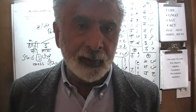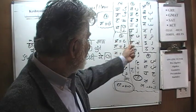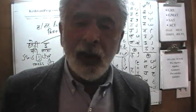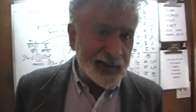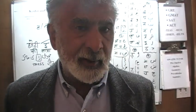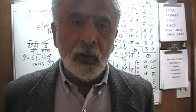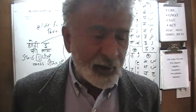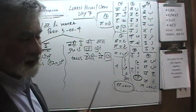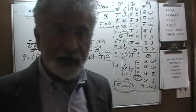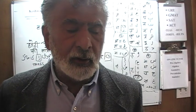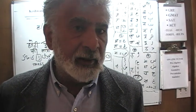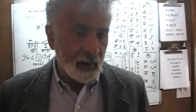Today is our day number seven. On the first four days, we learned some letters, and we learned Aki Matra and made some words using Aki Matra up to day number four. On day number five and six, we started the second matra — the Iki Matra — and learned some new words using Iki Matra and Aki Matra. Now we have two matras.